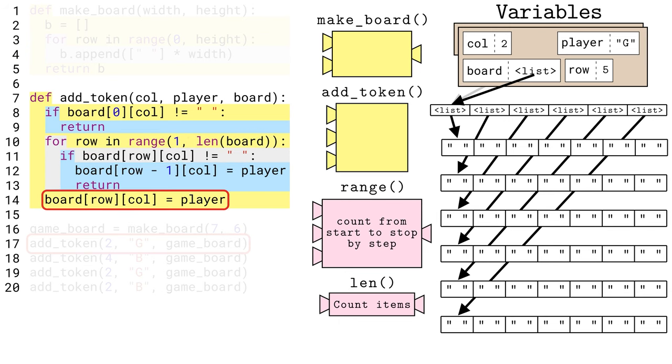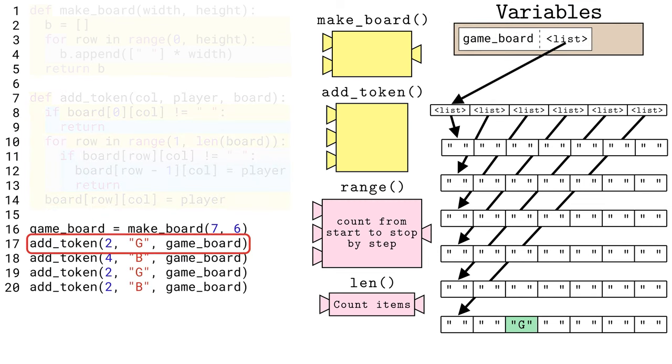The loop did not find any existing tokens in the column index 2, so line 14 puts the g token on the bottom row. The single equals sign operator takes the player variable from the right and saves it to the row and column of the two-dimensional board list on the left. Notice the row variable still has the last value from the range, a 5, which is the index of the bottom row. Python has reached the end of the function. There's not an explicit return statement, but Python pretends there is one, and the function completes, with no output value to return.